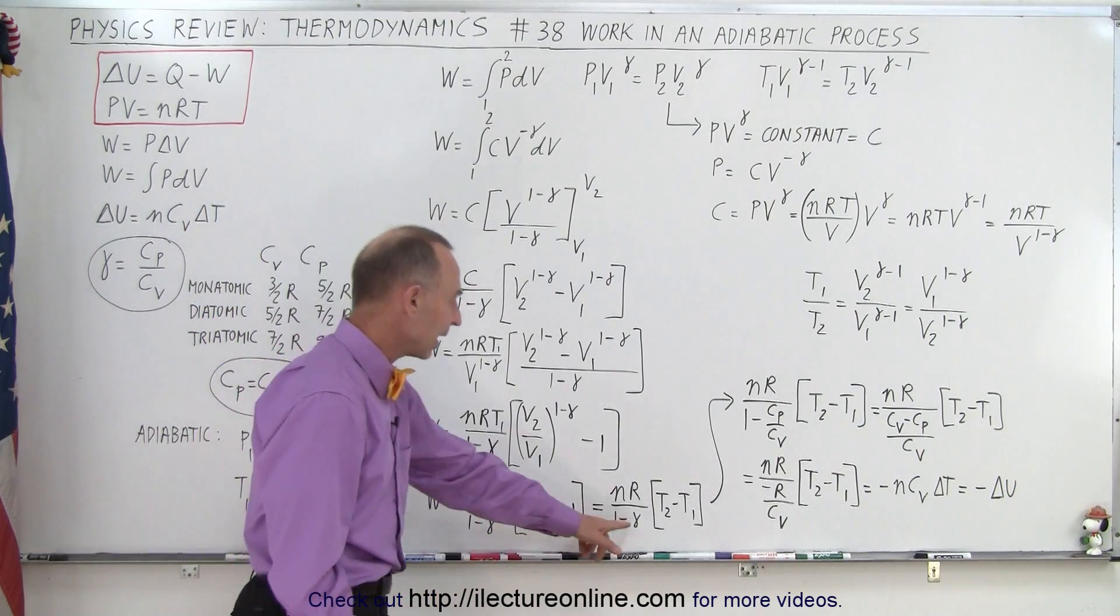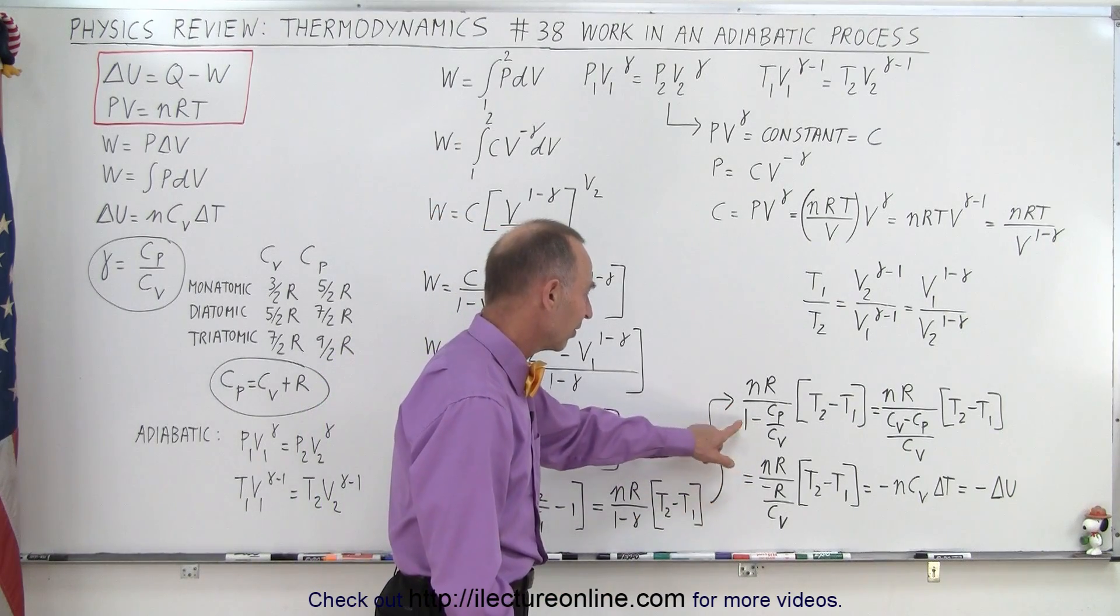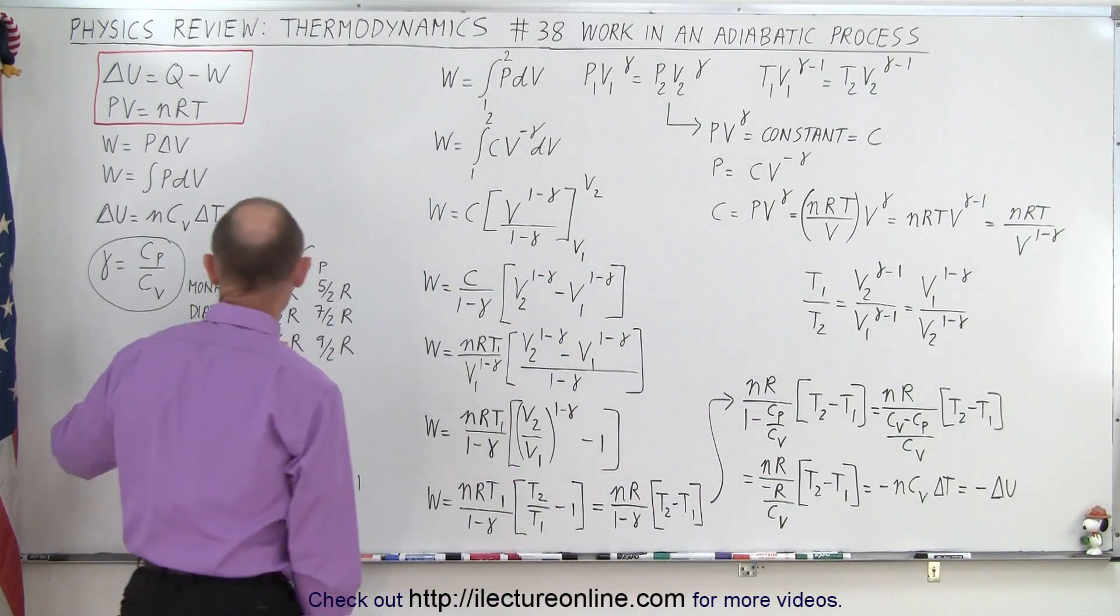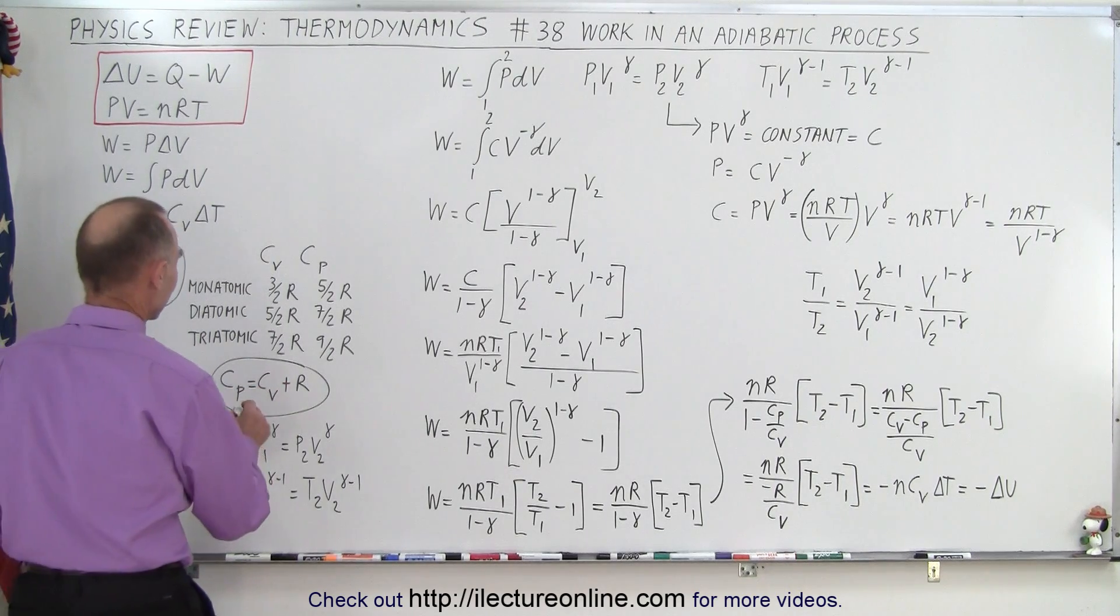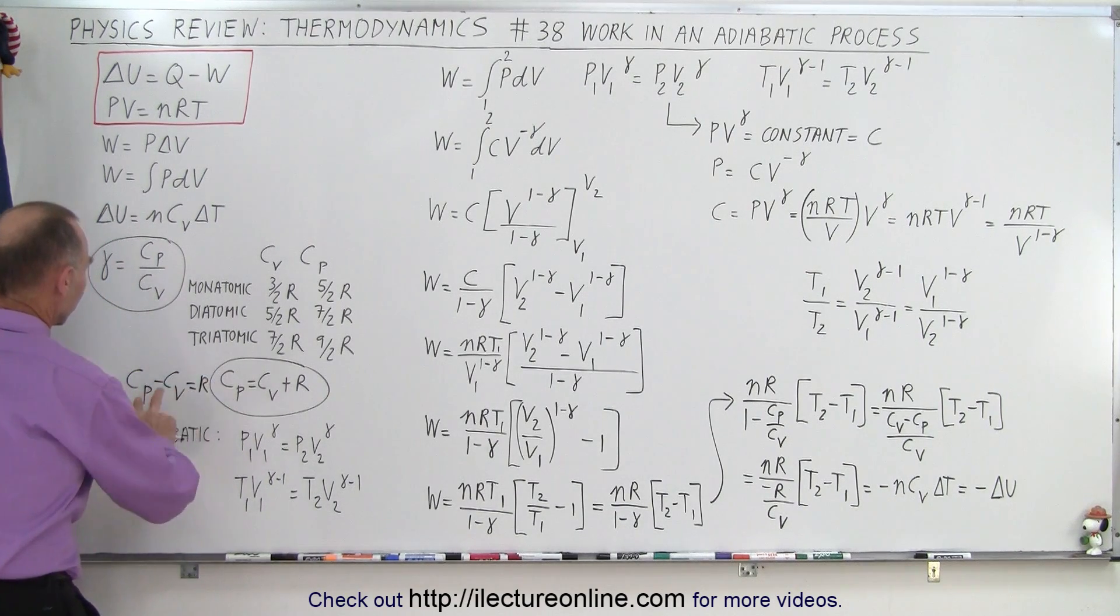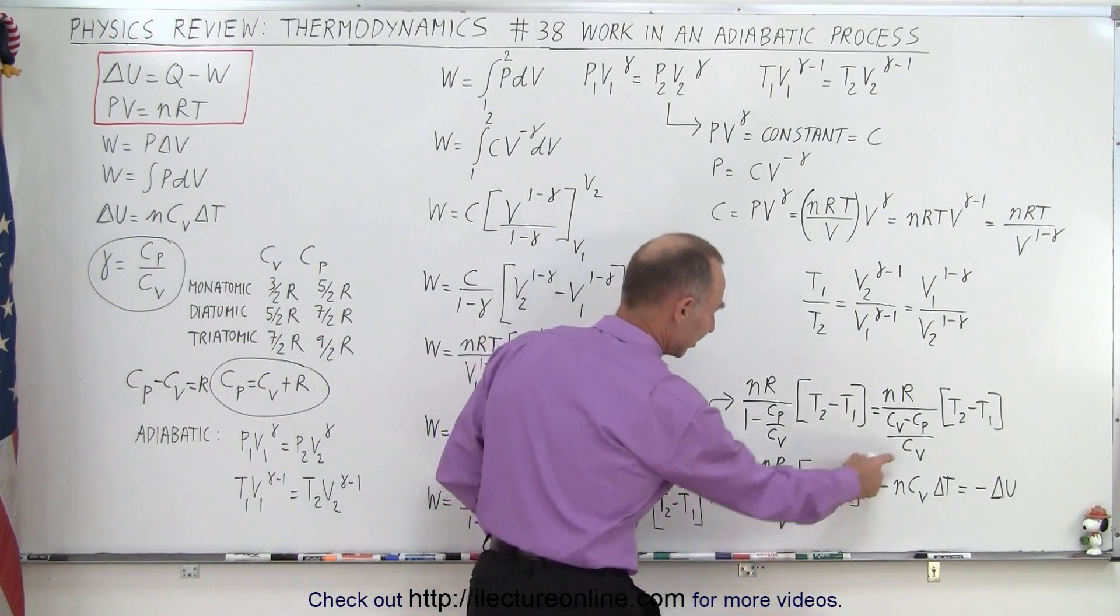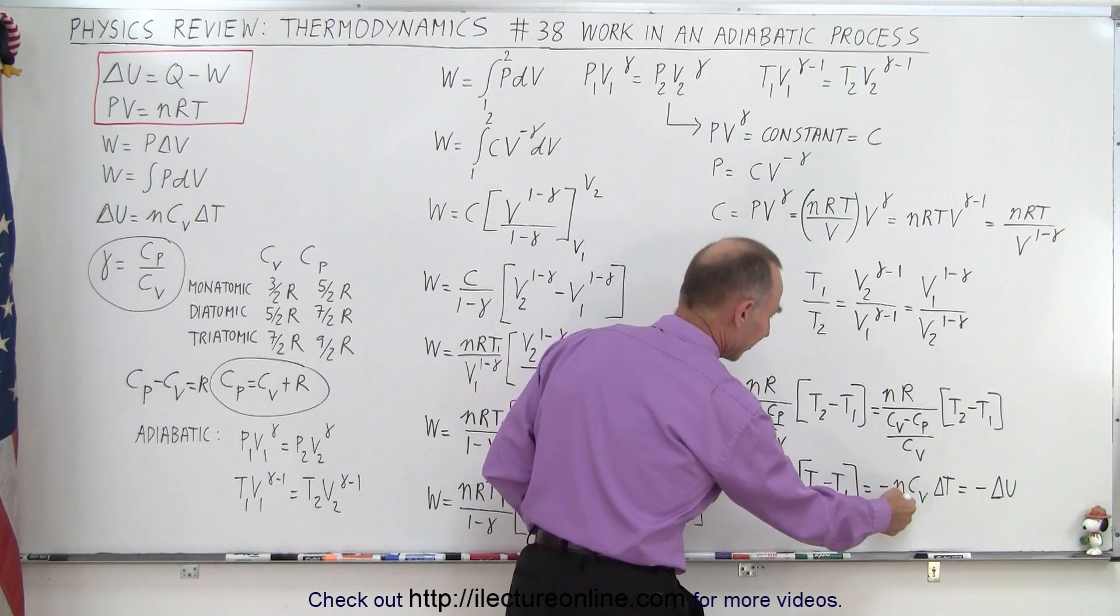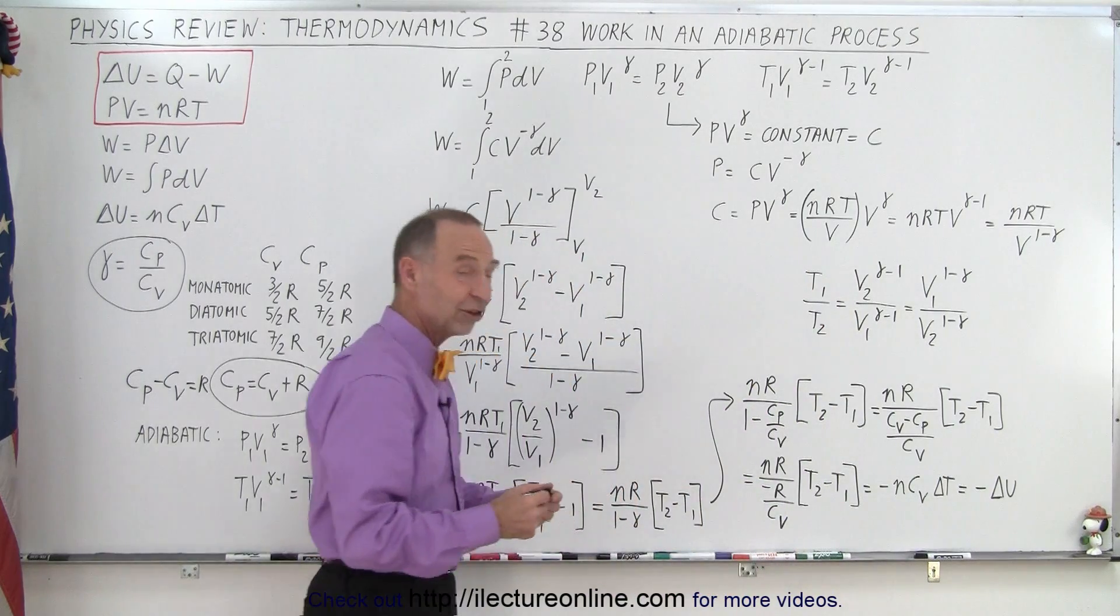And then finally realizing that gamma is Cp over Cv, and then simplifying that by having this as Cv minus Cp over Cv, and since Cp is Cv plus R, or with other words, I can write it as Cp minus Cv is equal to R, or the inverse of that is equal to negative R. I can then say that this is equal to negative R divided by Cv. The R's cancel out. The Cv goes to the numerator, so we end up with negative nCv, and this is simply delta T, which is the definition of the negative of the change in internal energy.